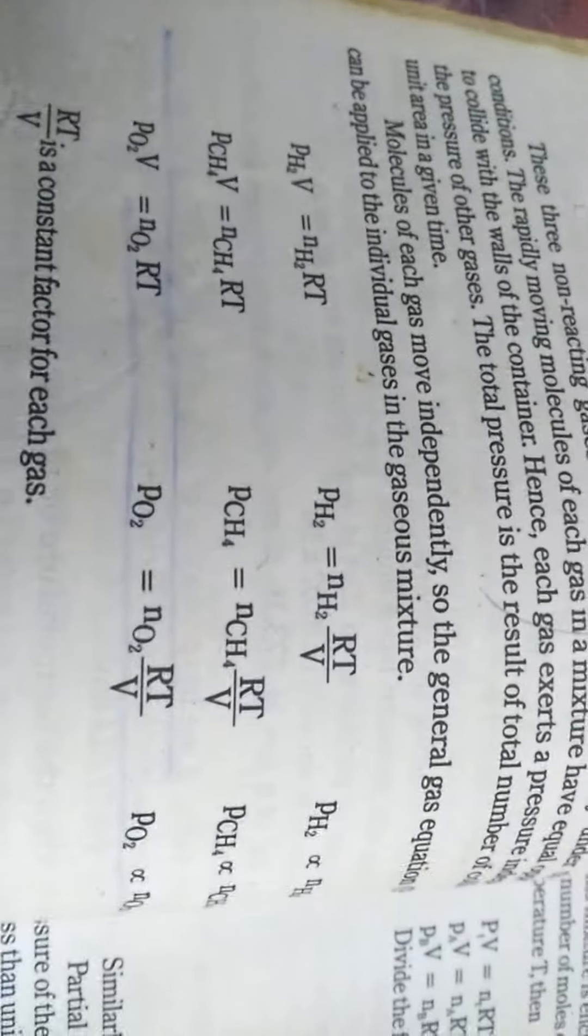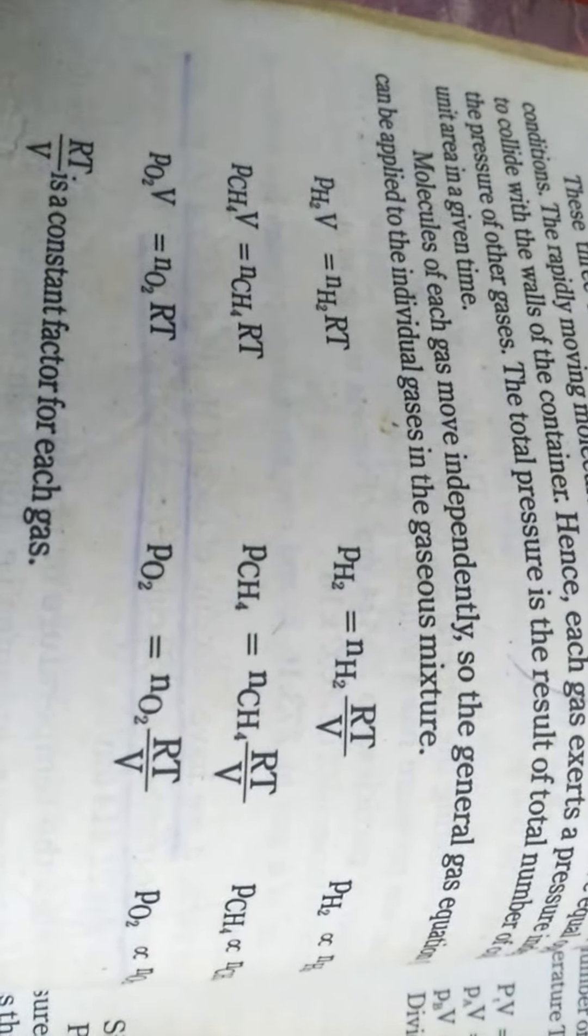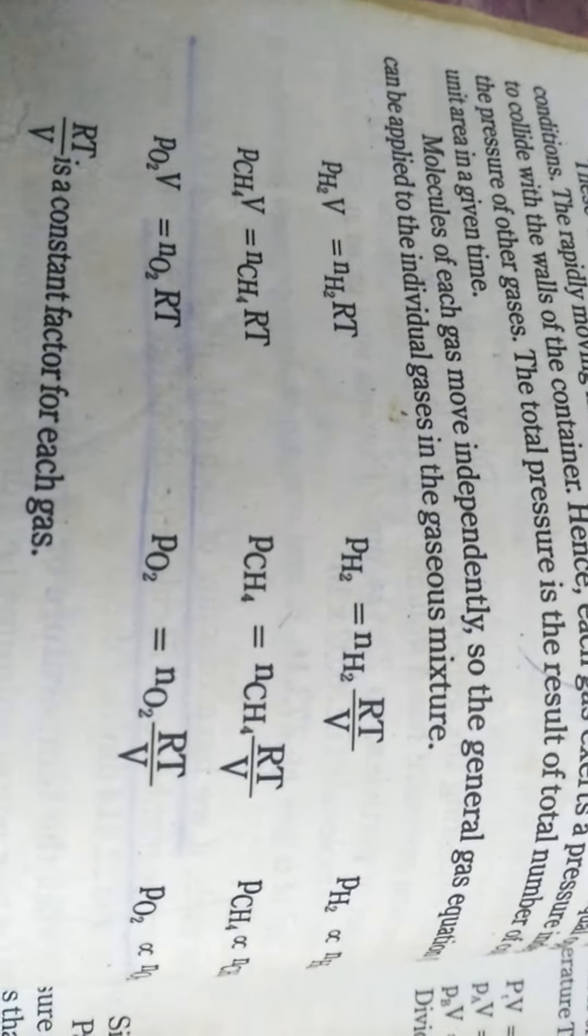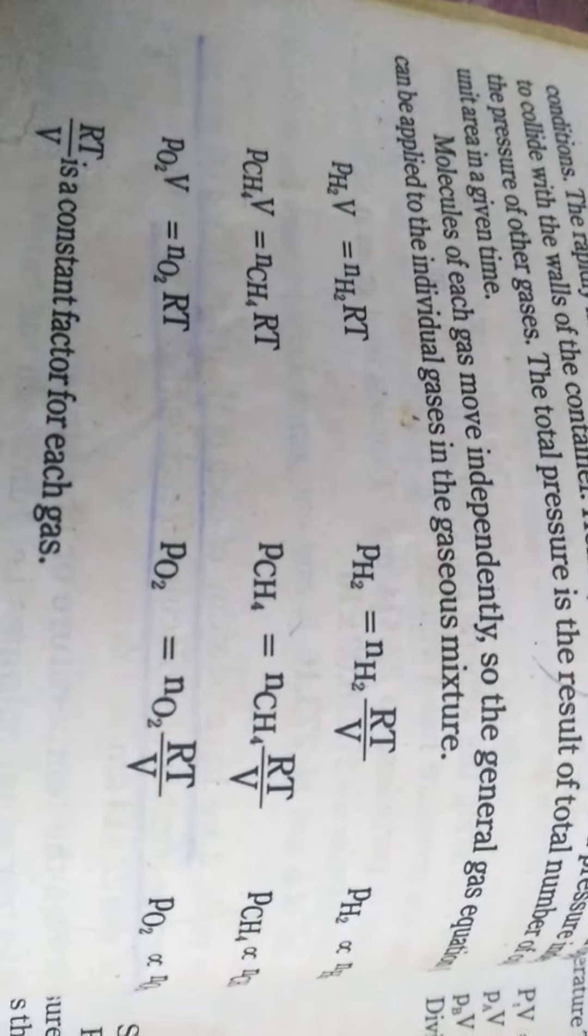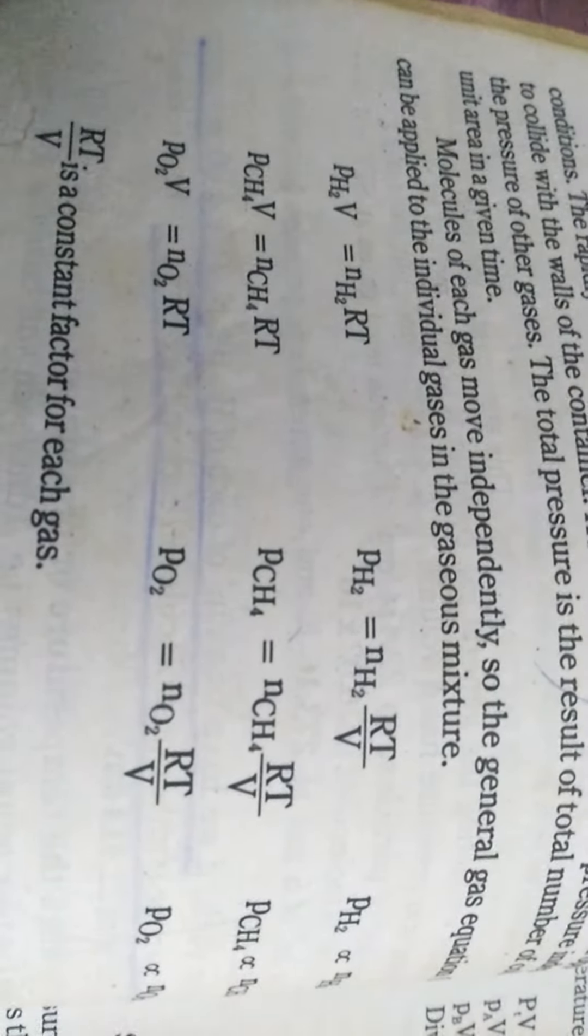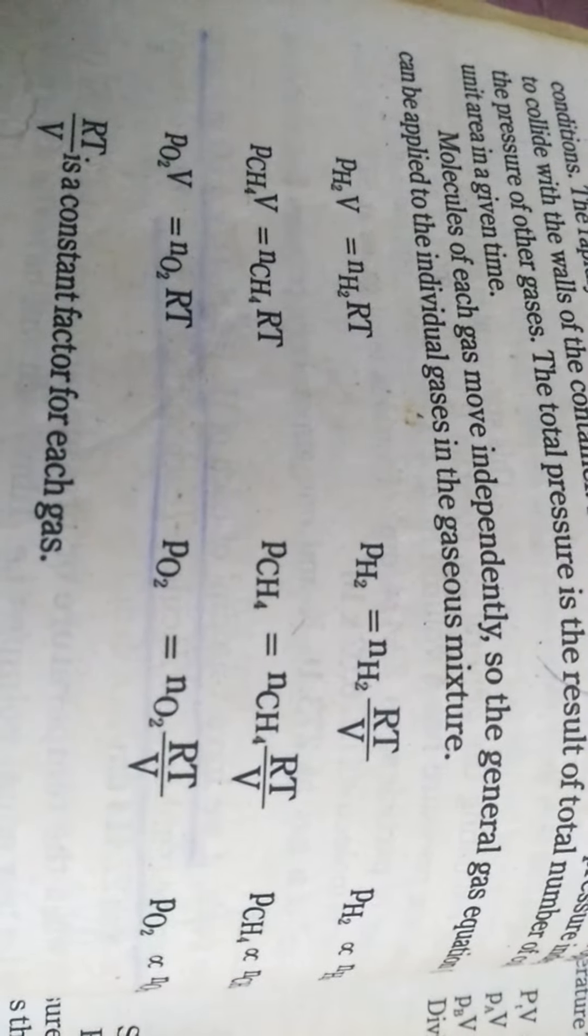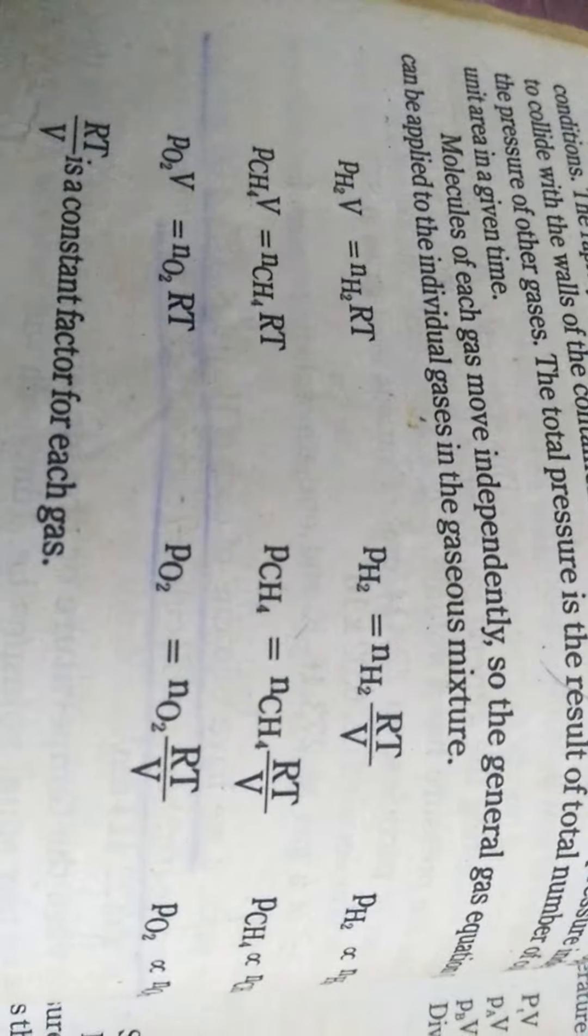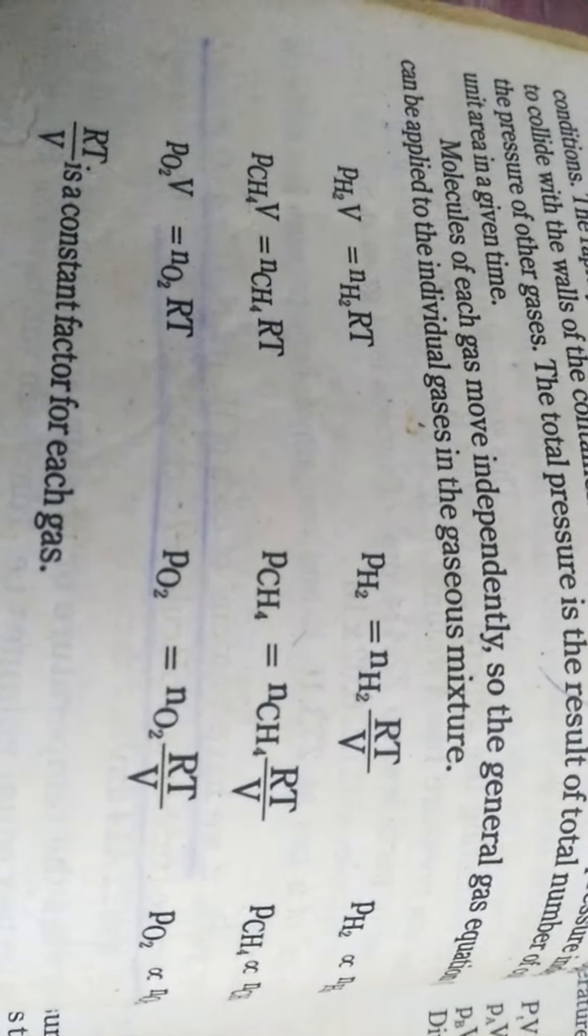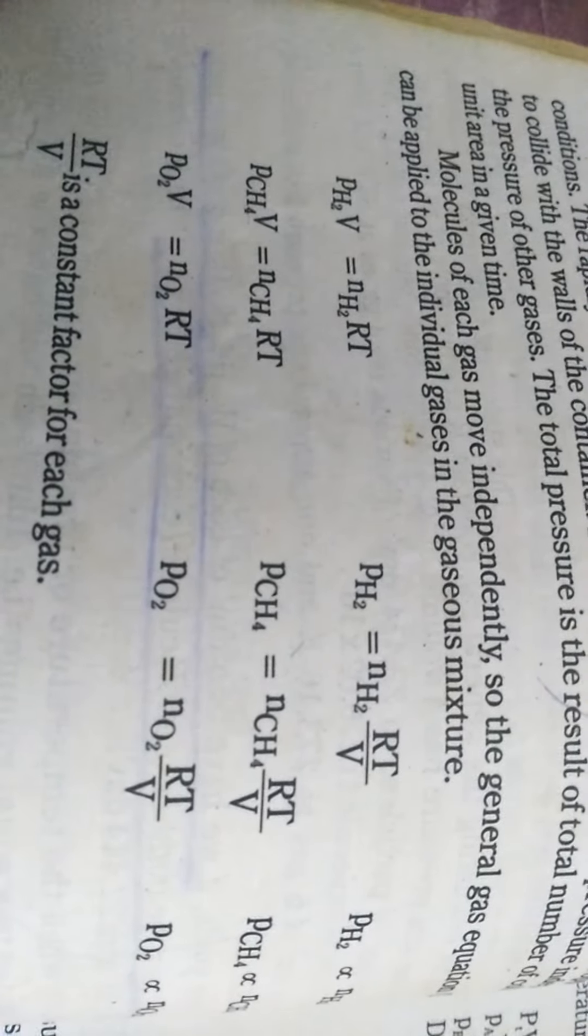And we can also calculate the individual partial pressures through a formula. As we know that P is the partial pressure of hydrogen gas, V is the volume, N is the number of moles of hydrogen gas, R and T. Same goes with methane gas and oxygen gas, aur humare paas jo is mein common aajata hai, that is RT aur V and it is called the constant factor for each gas.